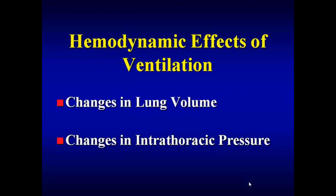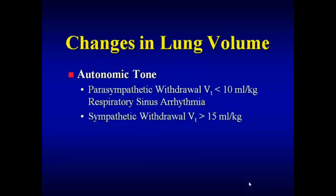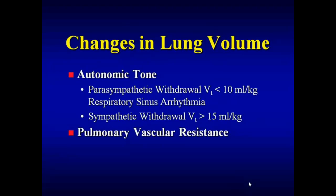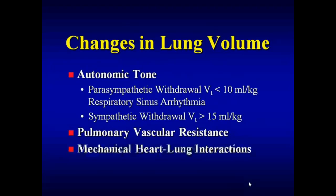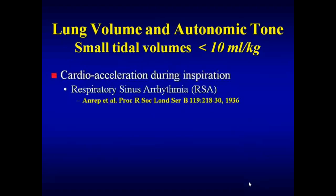The lung is richly innervated with autonomic nervous system receptors — both afferent and efferent, both parasympathetic and sympathetic. With spontaneous inspiration of a normal tidal volume less than 10 mls per kilogram, we have parasympathetic withdrawal and you get cardiac acceleration — known as respiratory sinus arrhythmia. But if you have really large tidal volumes, you also get sympathetic withdrawal, which causes myocardial depression. Changes in lung volume also alter systemic vascular resistance, and if lung volume gets too big, the heart gets compressed within the cardiac fossa, causing mechanical heart-lung interactions.